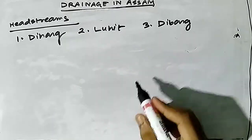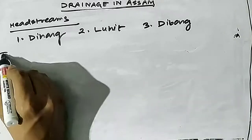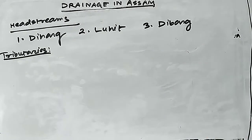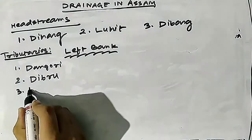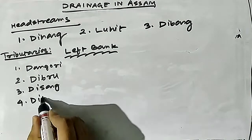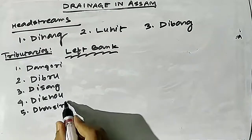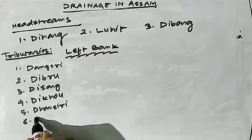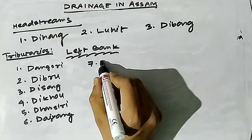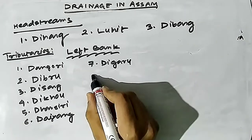The main left bank tributaries of the Brahmaputra are: Dangori, Diburu, Dishang, Dikho, Thansiri, and Doyang. These are among the key left bank rivers draining into the Brahmaputra.